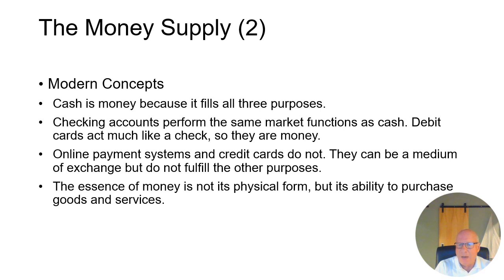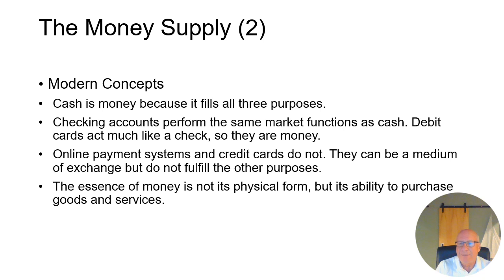A debit card represents money, whereas a credit card represents debt. So when we add up how much actual money is in existence, we don't include credit cards. The essence of money is not its physical form, but its ability to purchase goods and services. With Apple Pay and similar mechanisms to tap into money, they become less and less physical and more and more abstract.